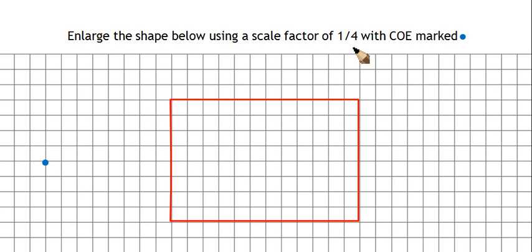Now, when we had a positive scale factor, we were multiplying all the lengths by 2 or 3 or 4. If we've got a fractional scale factor, the trick is to remember that if you're finding a fraction of something, that's like dividing by the denominator. So a quarter of a number is the same as dividing that number by 4. For an example, a quarter of 12 would be 3. And to work that out, we've done 12 divided by 4.